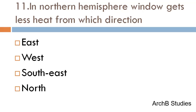In the northern hemisphere, a window gets less heat from which direction — east, west, southeast, or north? The correct answer is north.